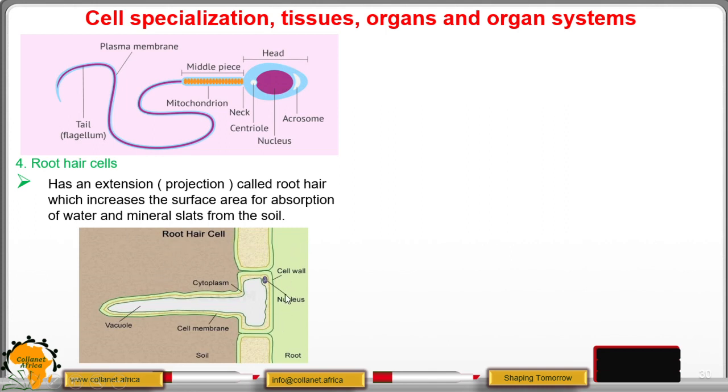This is the root hair cell. We have the cell wall of the plant, the nucleus, the cytoplasm. This is the vacuole. So this is basically the root itself, but has the root hair. This root hair cell contains the root hair, that is the projection. It increases the surface area for absorption of water from the soil.